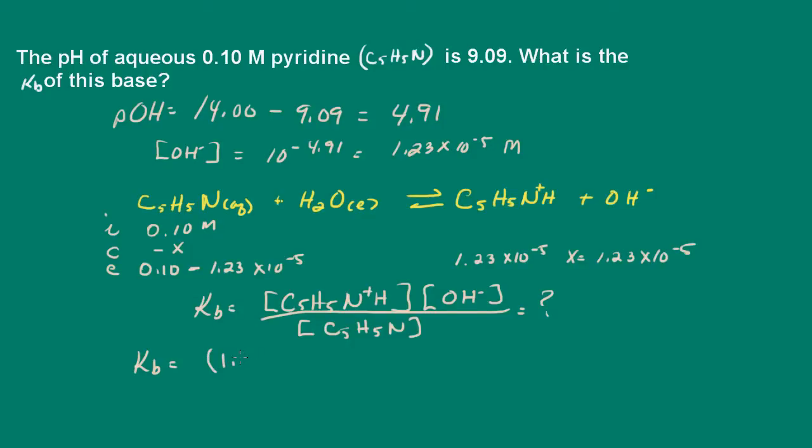And we have 1.23 times 10 to the negative 5, and multiply it by 1.23 times 10 to the negative 5. And our pyridine concentration is 0.1 minus 1.23 times 10 to the negative 5.